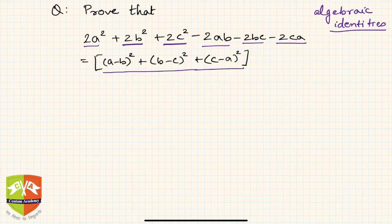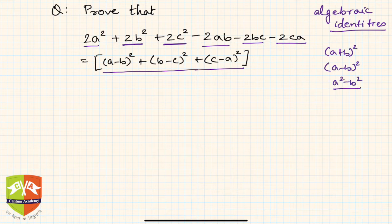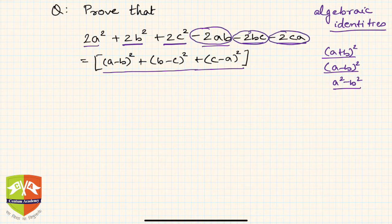If you see both sides, we have square terms. When there are square terms, we can use identities like (a+b)², (a-b)², and a²-b². Looking at the expression, there are twice ab, twice bc, and twice ca terms, which invite us to complete the square.